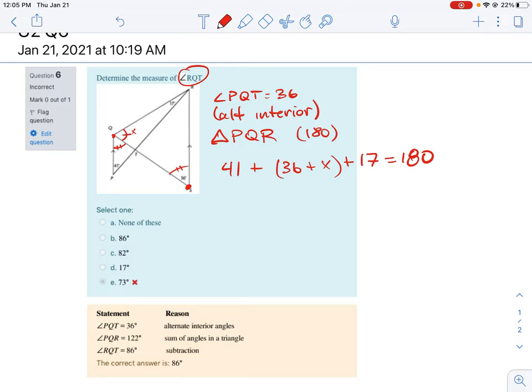So using this formula, we can deduce that X is going to be equal to 180, and then we're going to subtract 41, subtract 36, and subtract 17. Let's work this out here in the calculator. 180 minus 41 minus 36 minus 17 is equal to 86 degrees.